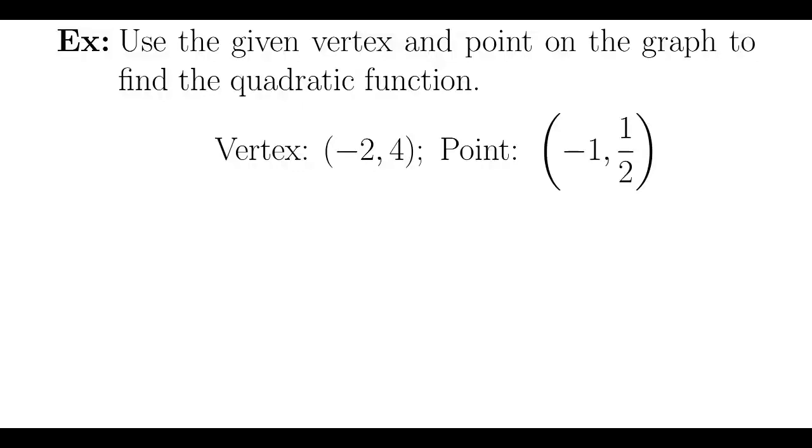Find the quadratic function, we'll call it q of x, that has the given vertex and passes through the given point. Well, we know that vertex form of a quadratic is a times x minus h squared plus k, where the vertex is h and k.